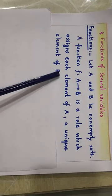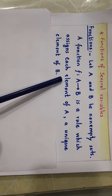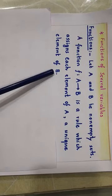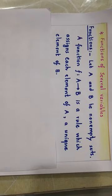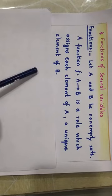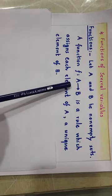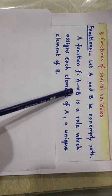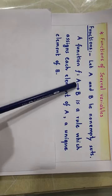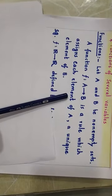Similarly, if an element of A has been assigned more than one element from set B, then again it will not be a function — it will be only a relation. So if f from A to B is a function, then A is called the domain and B is called the co-domain. All these things are already known to you.